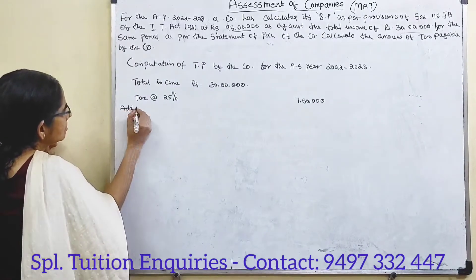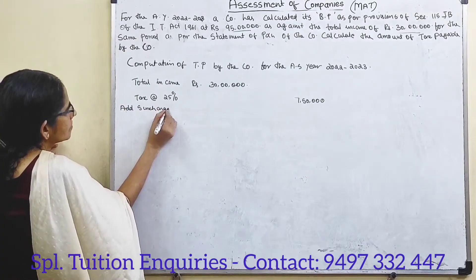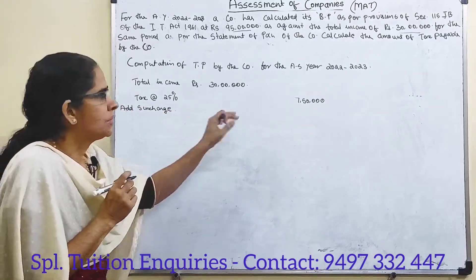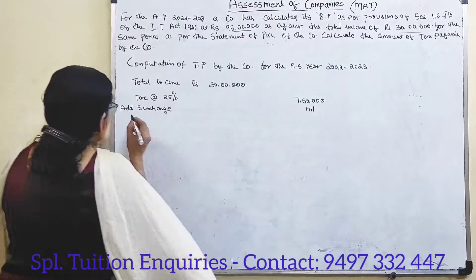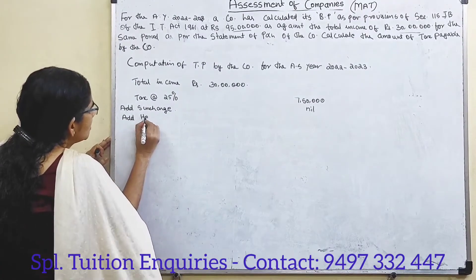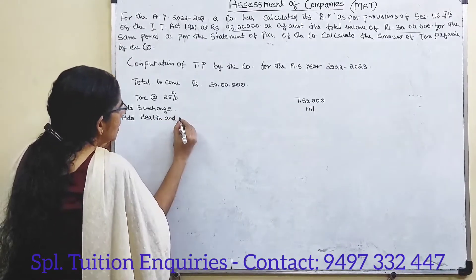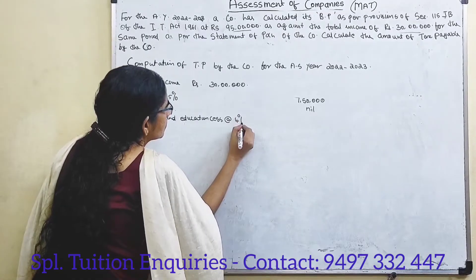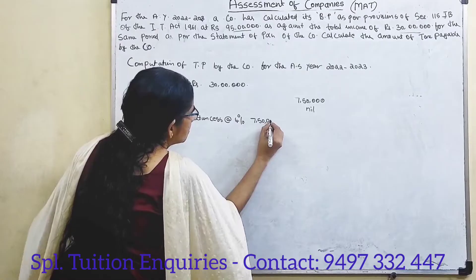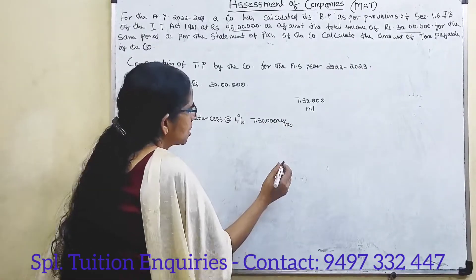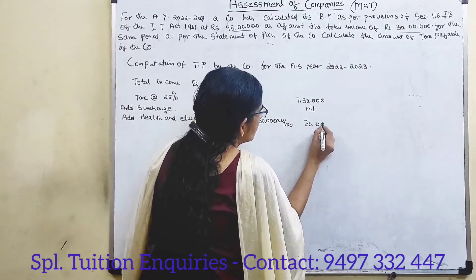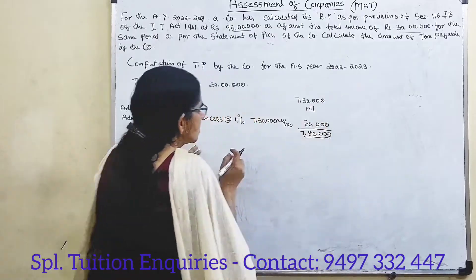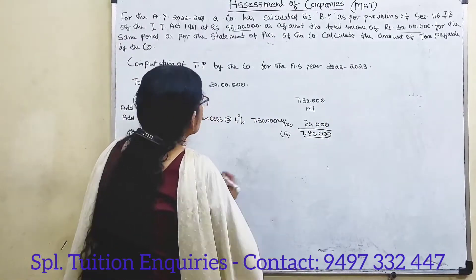Add surcharge. Since total income is below 1 crore, surcharge at the rate of 4% on Rs. 7 lakh 50 thousand equals Rs. 30 thousand. Therefore, total tax payable on Rs. 30 lakhs is Rs. 7 lakh 80 thousand.